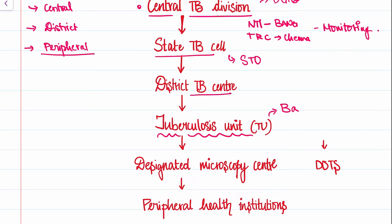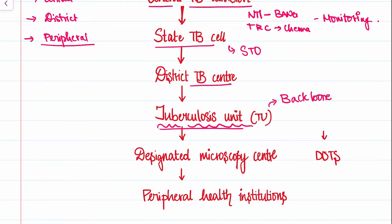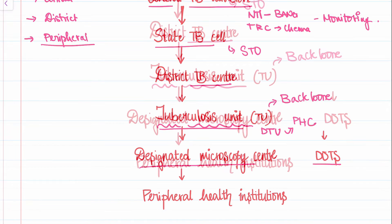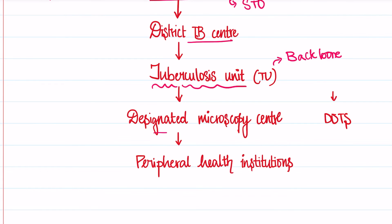The Tuberculosis Unit is the functional unit — this is where the major work takes place. The District Tuberculosis Unit, the DTU, is where the whole supervision of the program and coordination of all primary health centers, the Designated Microscopy Centers, and the DOTS takes place.